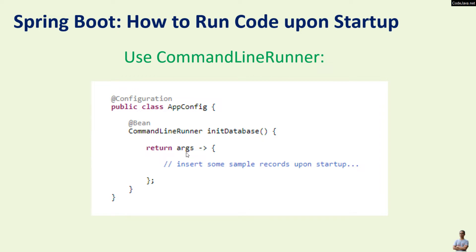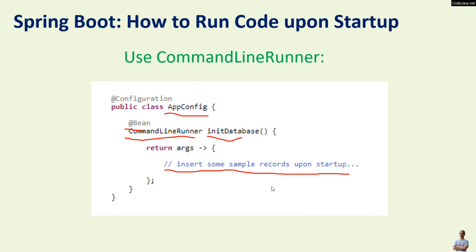Let me show you the first way to run code upon the startup of a Spring-based application using CommandLineRunner. You need to implement a method that declares a bean of type CommandLineRunner in a configuration class, and put the code that needs to be executed upon startup in that block — for example, inserting some sample records into the database upon startup.